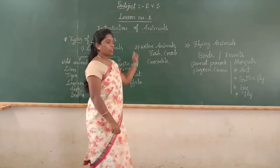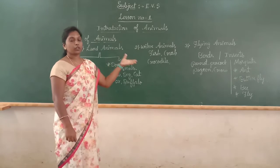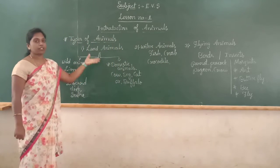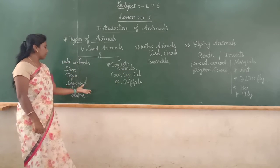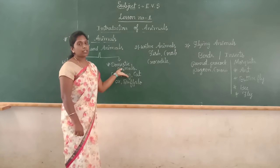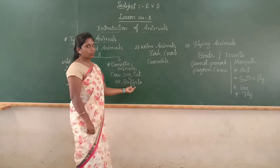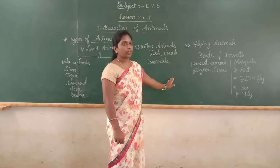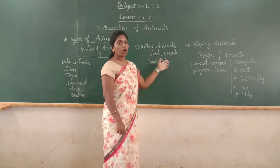Today we learned about introduction of animals and types of animals. We mainly divide animals into three groups: land animals, water animals, and flying animals. Land animals are divided into two groups: wild animals and domestic animals. Wild animals are lion, tiger, leopard, deer, snake — these animals live in the jungle. Domestic animals live on a farm or in a house — cow, dog, cat, ox, buffalo. Some animals live in water — they are called water animals, for example fish, crab, crocodile, tortoise — they live in water and on land also.